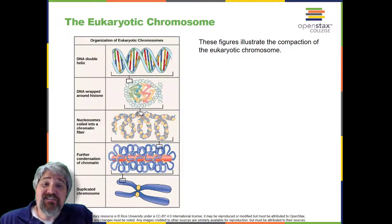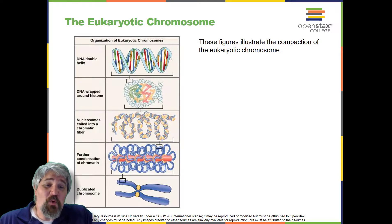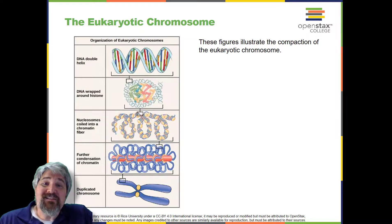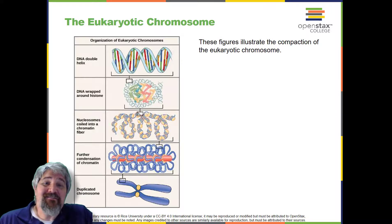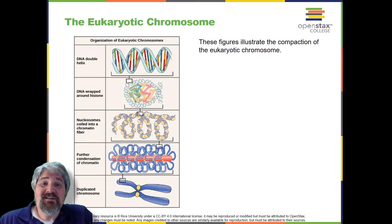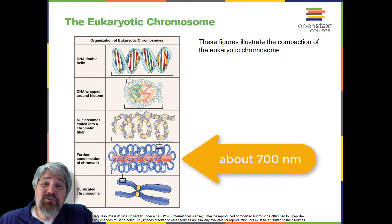Eukaryotes, whose chromosomes each consist of a linear DNA molecule, employ a different type of packing strategy to fit their DNA inside the nucleus. At the most basic level, DNA is wrapped around proteins known as histones to form structures called nucleosomes. The DNA is wrapped tightly around the histone core, and each nucleosome is linked to the next by a short strand of DNA free of histones — also known as the beads on a string structure. The nucleosomes stack compactly onto each other to form a 30-nanometer wide fiber, which is further coiled into a thicker and more compact structure. At the metaphase stage of mitosis, the chromosomes are at their most compacted, approximately 700 nanometers in width, and are found in association with scaffold proteins.